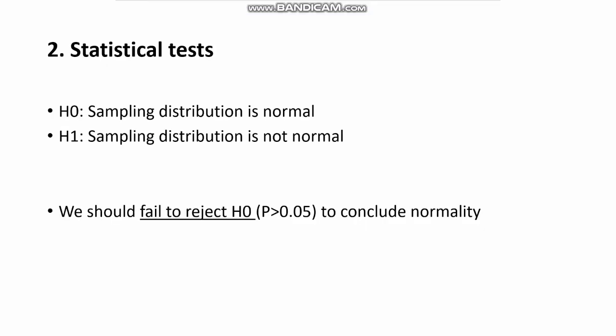Visual inspection is not very reliable on its own, so we need to perform statistical tests to compare your sample distribution with a normal distribution. For all of these tests, the null hypothesis states that the sampling distribution is normal, while the alternative hypothesis states that it is not. To ensure normality, the desired result is failing to reject the null hypothesis — in other words, a p-value larger than 0.05 at the 95% confidence level.